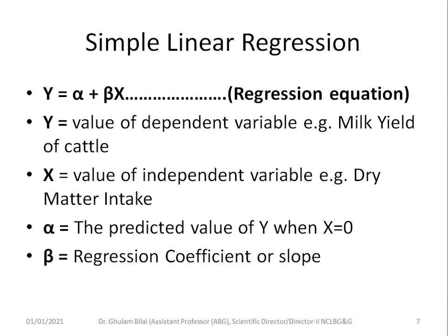Here, y is the value of the dependent variable (e.g., milk yield) and x is the value of the independent variable (e.g., dry matter intake). Alpha is the predicted value of y when x equals zero — so if there is zero intake, what would be the milk yield? Beta is the regression coefficient or slope, which we calculate in the next slide.